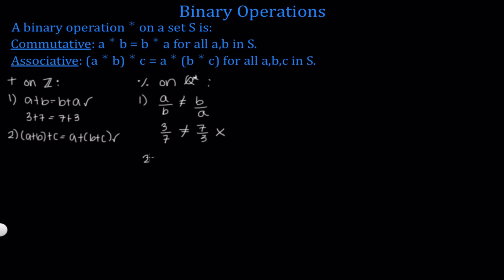Now let's check for associativity. I want to point out that just because division is not commutative does not mean that it's not associative. A binary operation can be commutative and not associative, or associative without being commutative. These are two independent properties, so we have to check both.